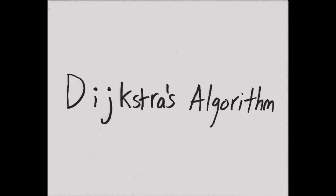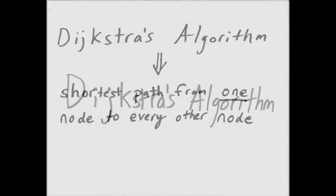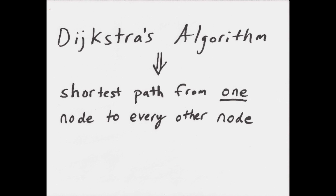Today I'm going to teach you how to run Dijkstra's algorithm on a weighted directed graph. Dijkstra's algorithm tells you the shortest distance from one node to every other node in the graph. This differs from Prim's and Kruskal's which result in minimum spanning trees.